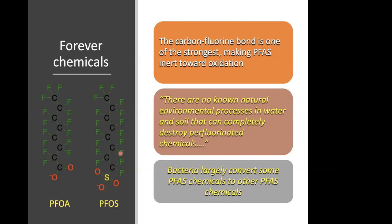What has become obvious over the years is that because PFAS are resistant to oxidation, bacteria—which usually break down substances released to the environment—don't do a great job of oxidizing them to carbon dioxide and fluoride. There are no known natural environmental processes in water and soil that can completely destroy perfluorinated chemicals. They might be destroyed if they get into the atmosphere and ultraviolet light from the sun breaks them down, but in water and soil, perfluorinated chemicals are largely going to persist indefinitely. For this reason, PFAS chemicals have been given the designation as 'forever chemicals'—they don't turn into other things; they just move from one place to another.